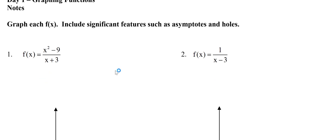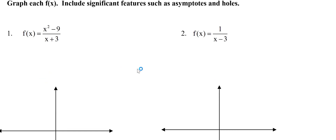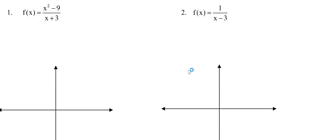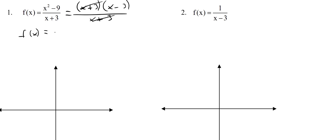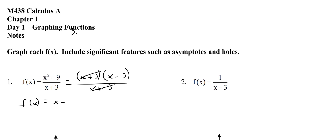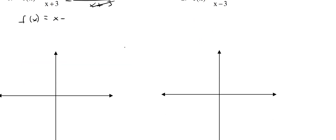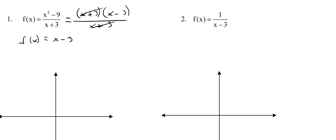So the first problem says to graph this function. The first thing you want to do before you graph a rational function is see if you can simplify it. You can factor the top to (x+3)(x-3), and the bottom is (x+3). So this cancels, which is nice, and your new function is f(x) = x - 3.